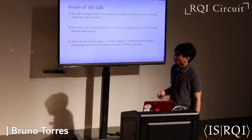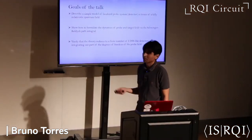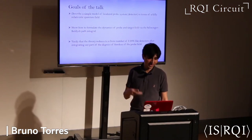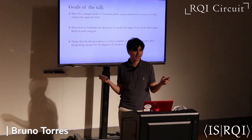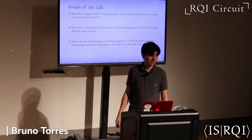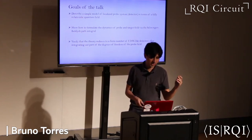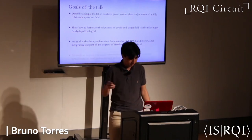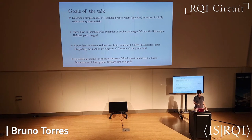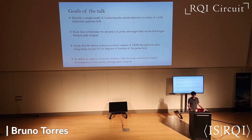I'm also going to show how the theory can be reduced to a finite number of Unruh-DeWitt-like detectors given by harmonic oscillator degrees of freedom, obtained systematically by tracing out part of the degrees of freedom of the probe. This will draw the connection between field-theoretic and detector-based formulations of local probes in a somewhat systematic manner.